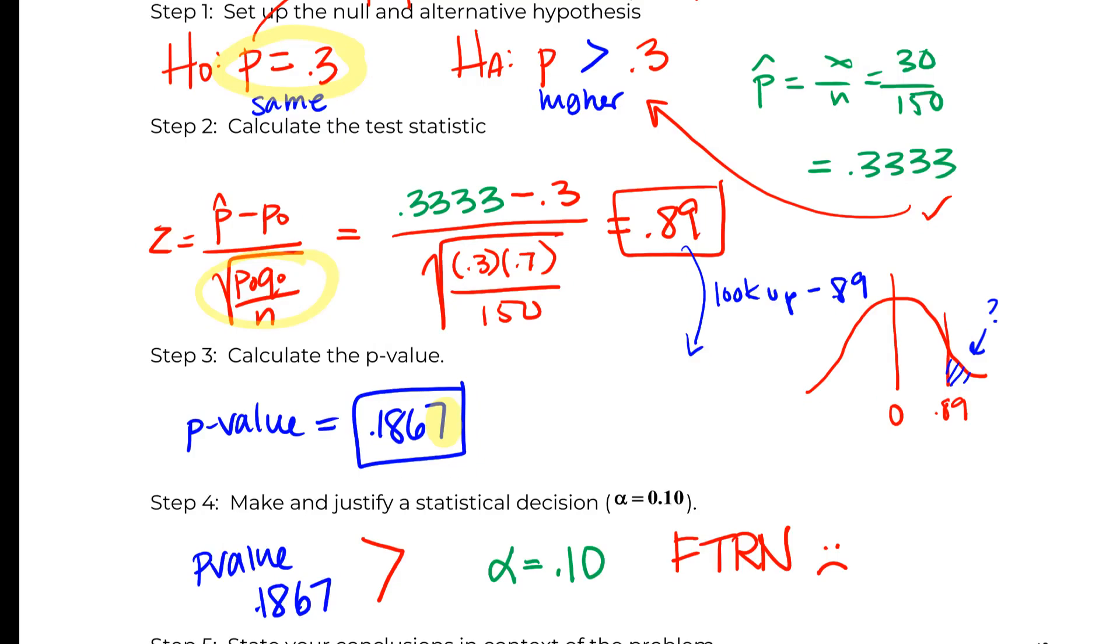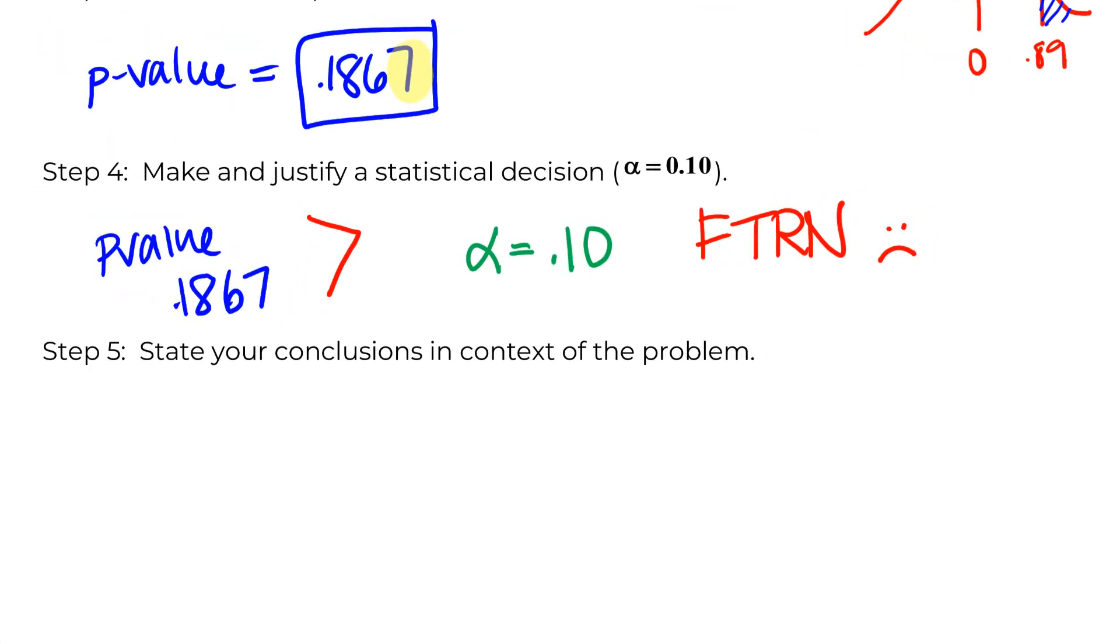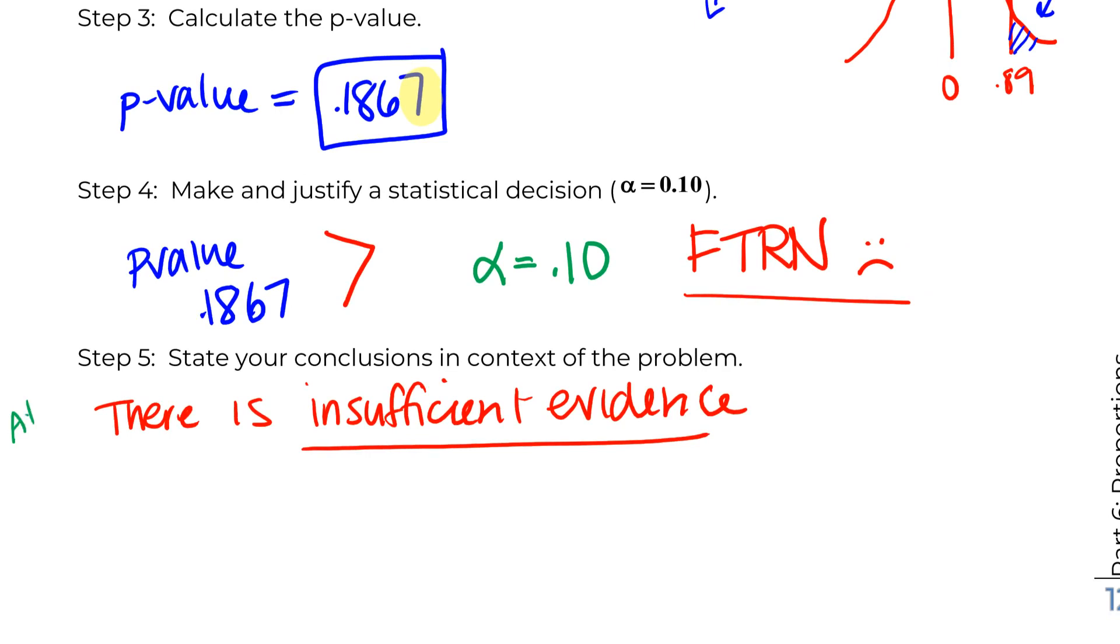We're going to fail to reject the null. And whenever you fail to reject the null, and again remember this greater than is not related to that greater than. This is a claim that it's higher, and this is our assessing the evidence to say, oh nope, we don't have evidence. When I fail to reject the null, my conclusion here is going to start with there is insufficient or not enough, whatever you want to write here. Let's do insufficient just to be different from my usual. Insufficient evidence.